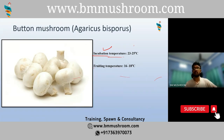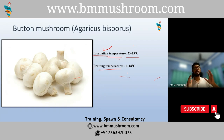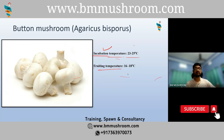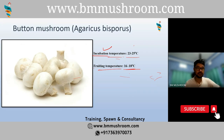The incubation temperature for button mushroom is around 23 to 25 degrees Celsius. The fruiting temperature is the temperature to which we suddenly shift our farm room in order to put the mushroom under stress — making them feel their substrate food is over and their life is near an end — so in order to survive, they reproduce and grow their fruiting bodies.